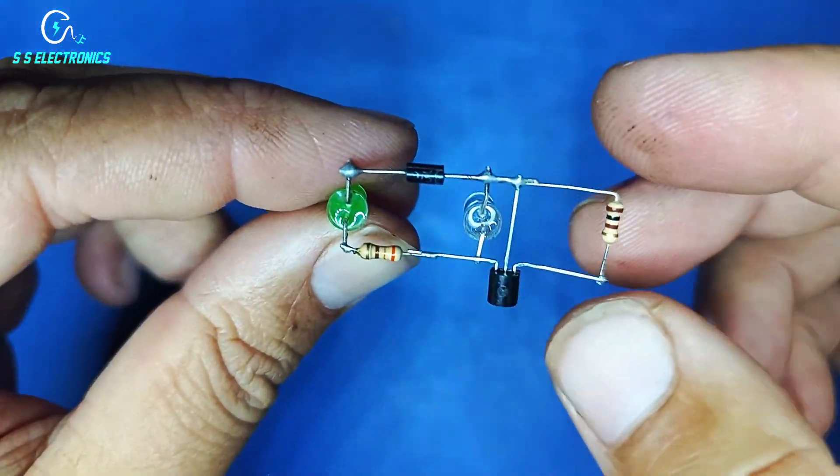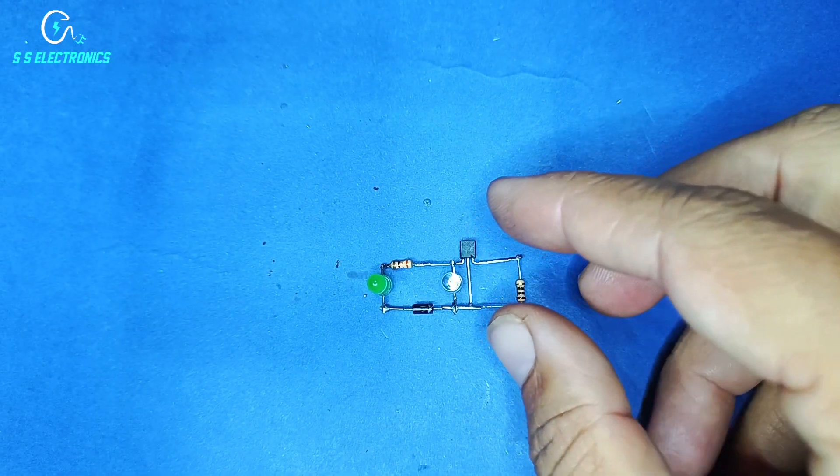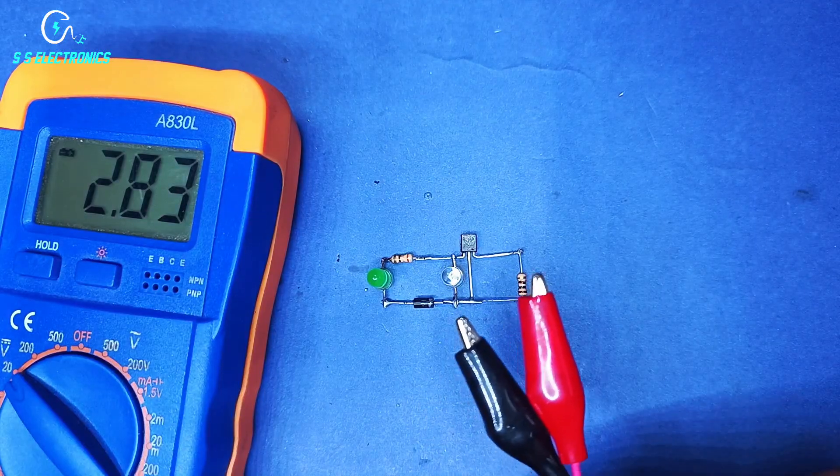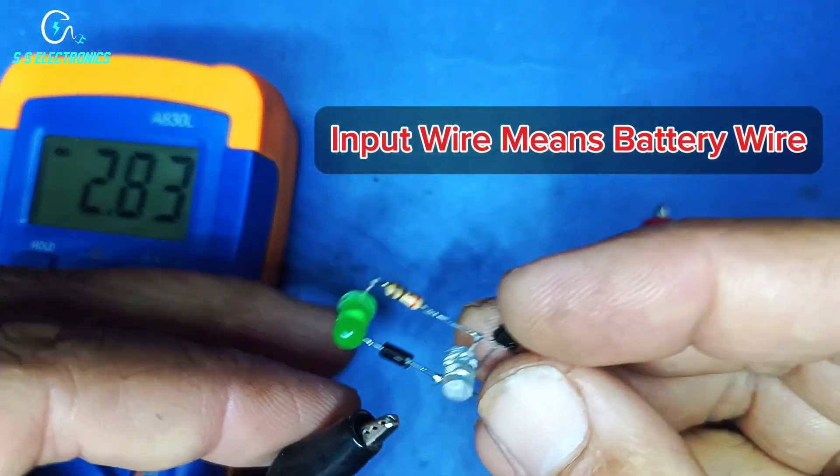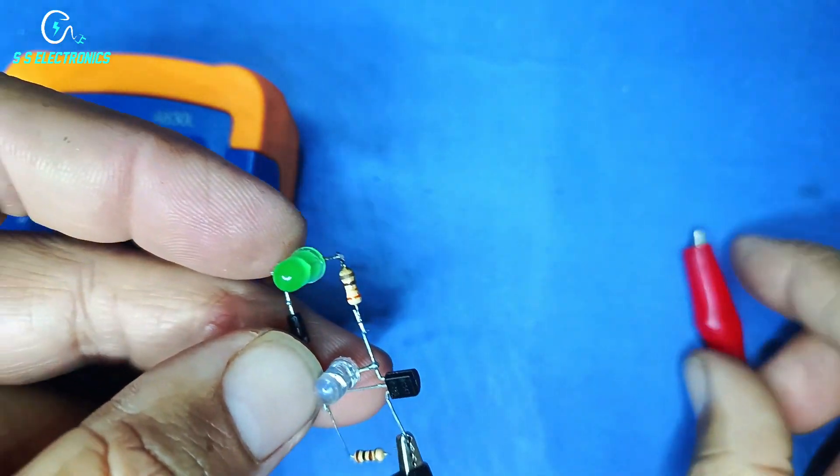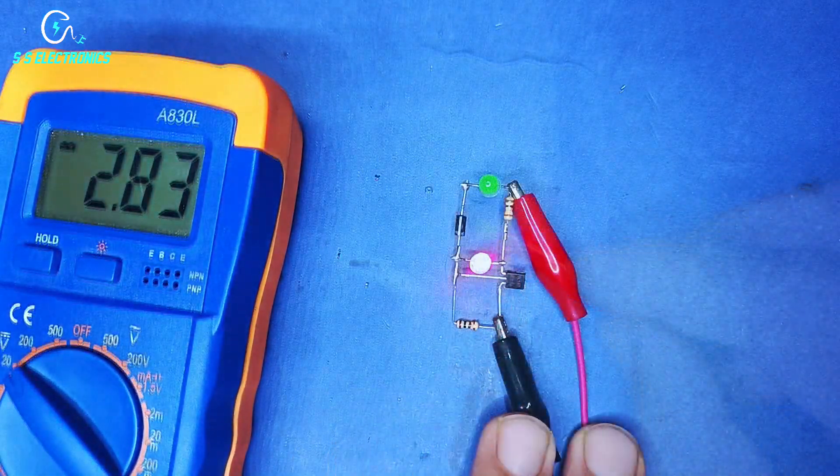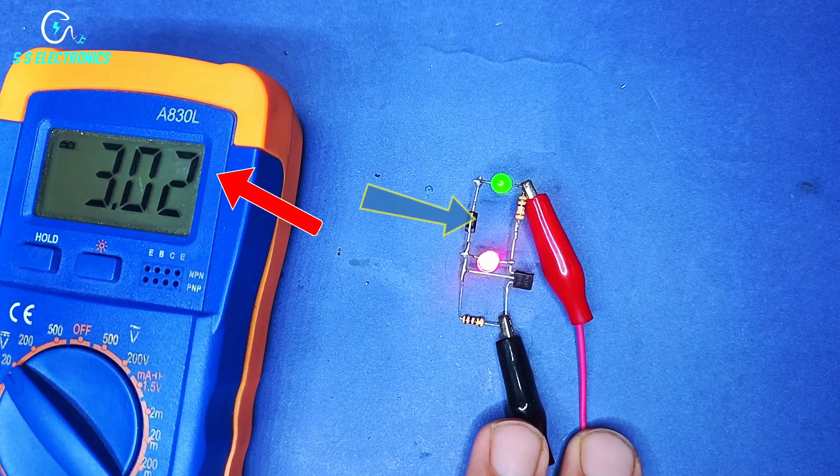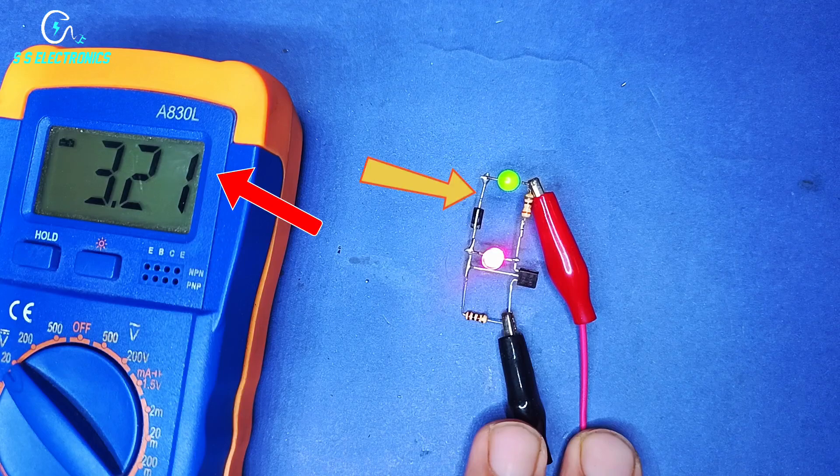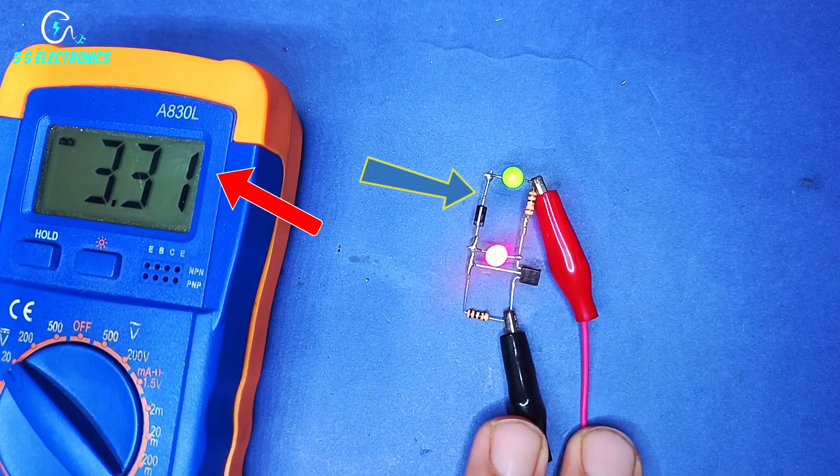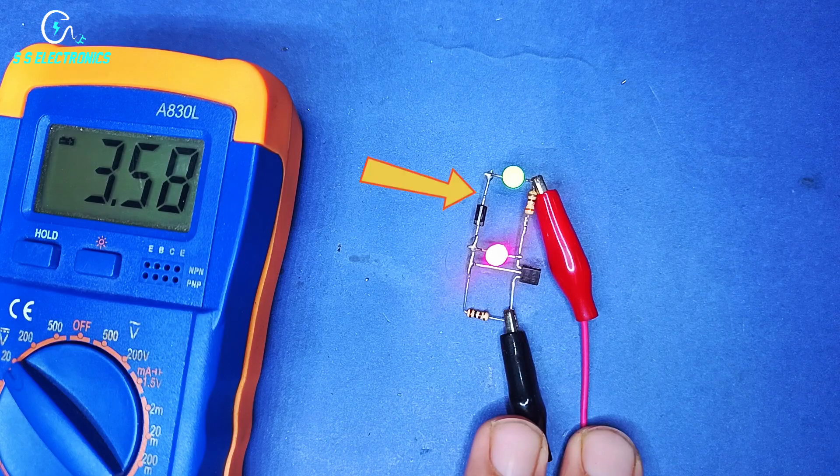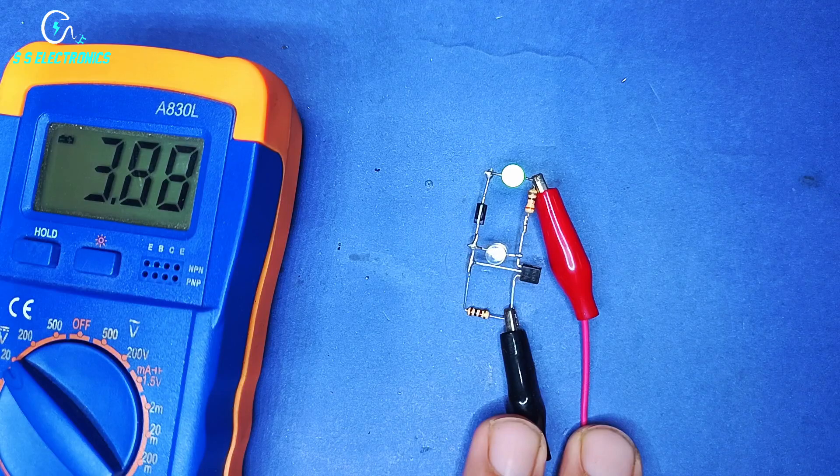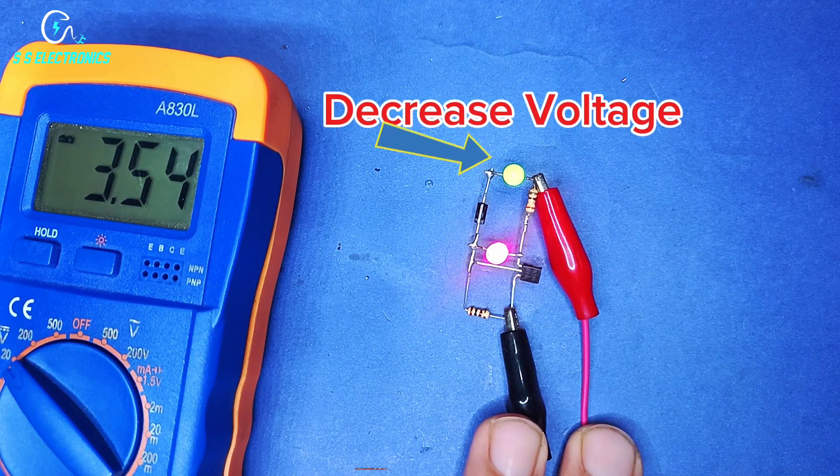Now our circuit is ready, let's test it. Input current through the battery wire. When battery current is up, green LED is bright. When battery current is down, red LED is bright.